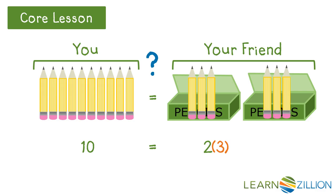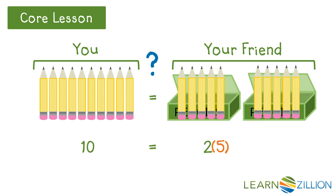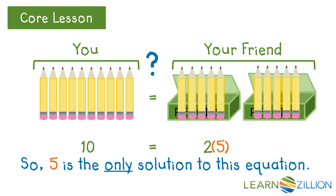Try numbers out. Let's start with 3. Right away you can see that you have more pencils than your friend, so 3 is not the solution. So let's try a larger number: 5. Now you can see that you and your friend have the same number of pencils. 10 equals 2 times 5 — they're the same value. So 5 is the only solution to this equation. If you had more or less than 5 pencils in each box, you and your friend would not have the same amount.